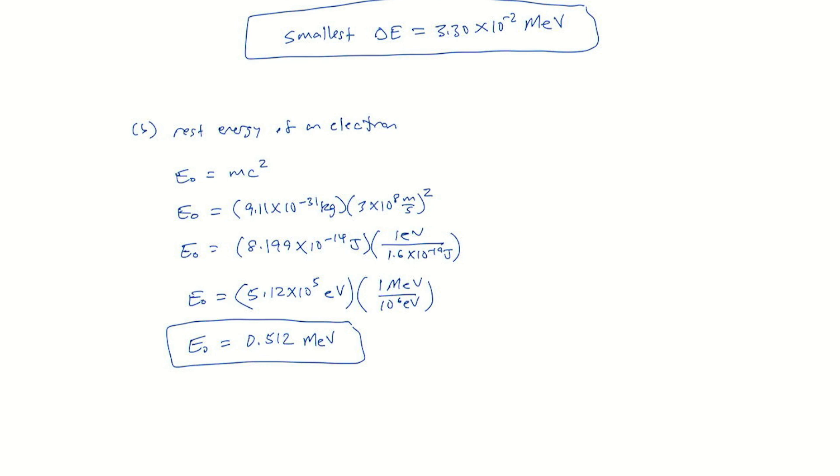Now we can compare by looking at the uncertainty divided by the rest energy. So we have 3.30 times 10 to the minus 2 mega electron volts divided by 0.512 mega electron volts. And that works out to be 6.43 times 10 to the minus 2.